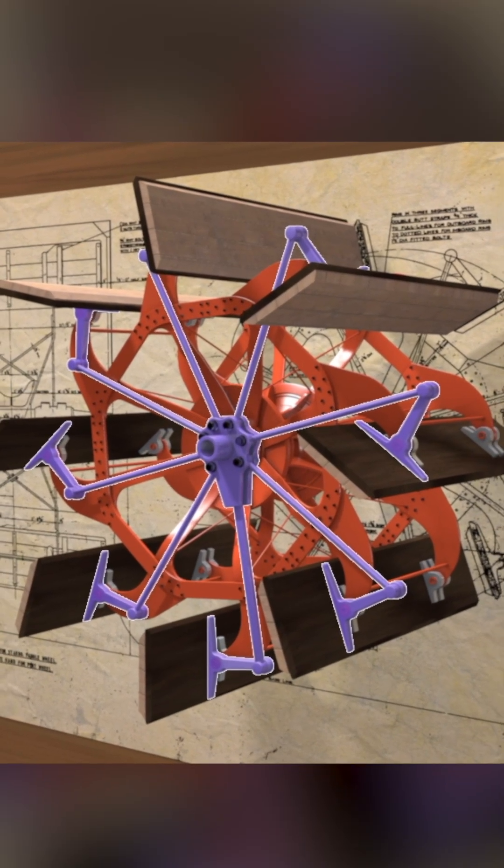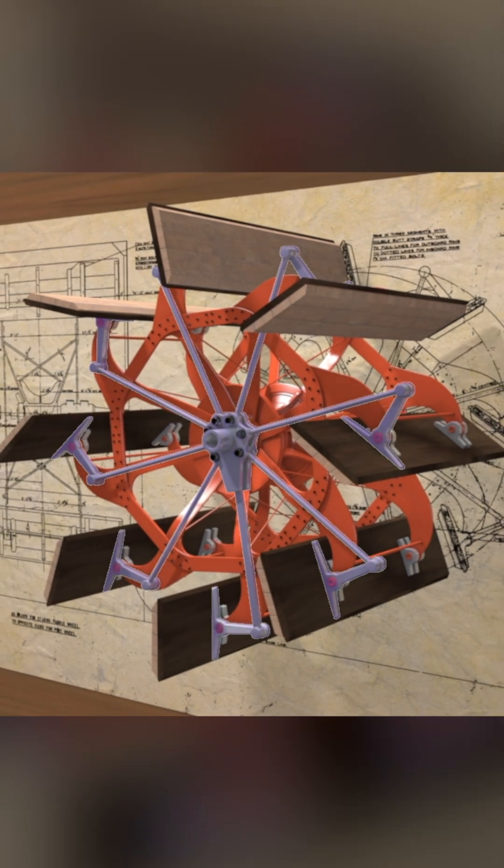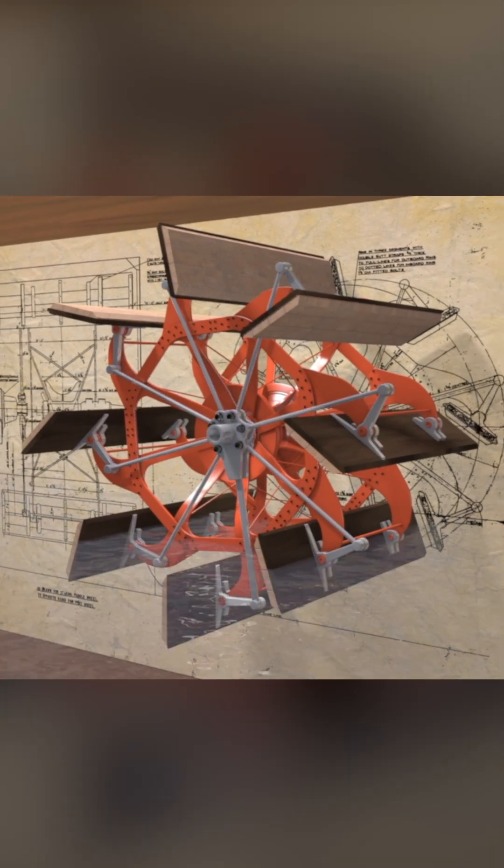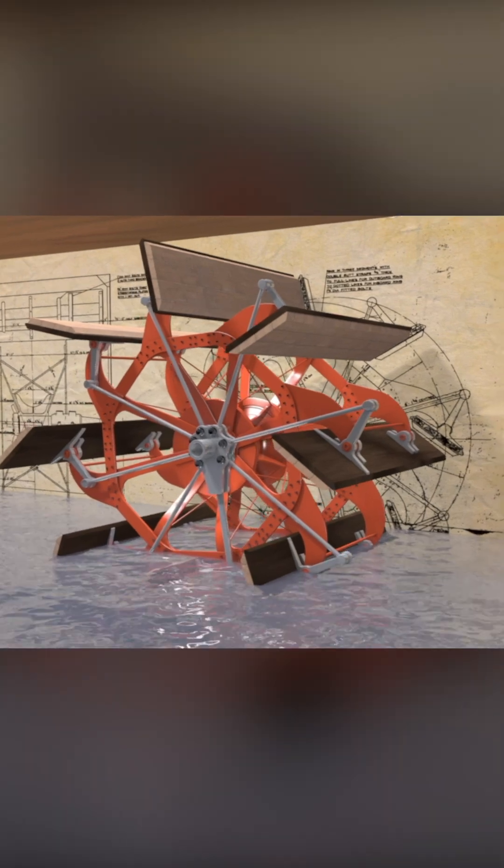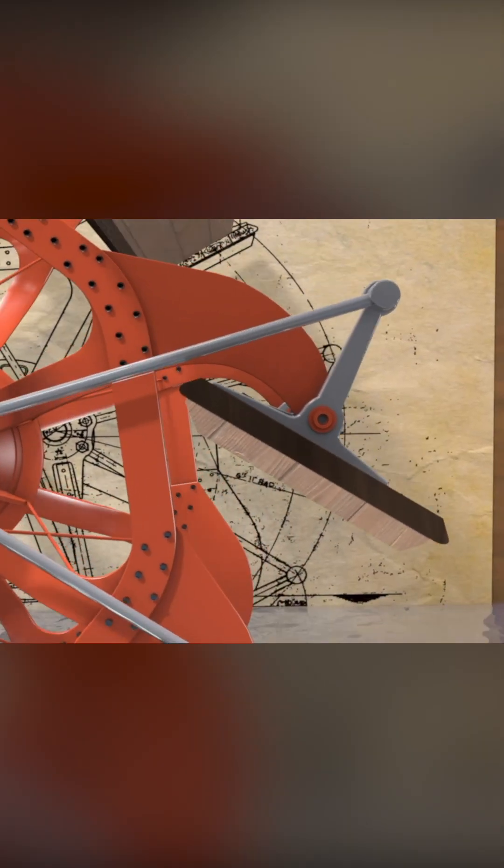The role of the feathering system is to make the paddle wheels more efficient by making sure that they are almost vertical as they enter and leave the water. This reduces friction and maximises their propulsive force.